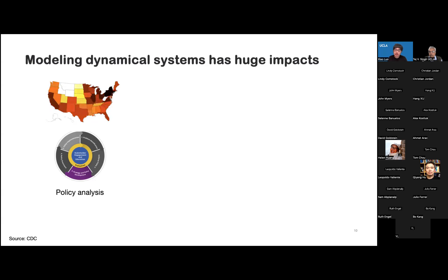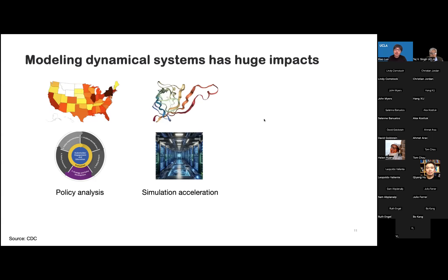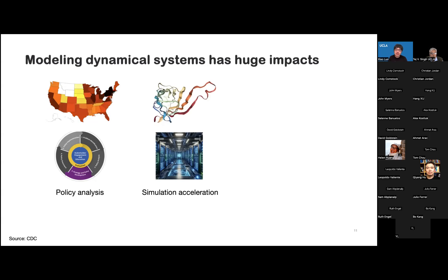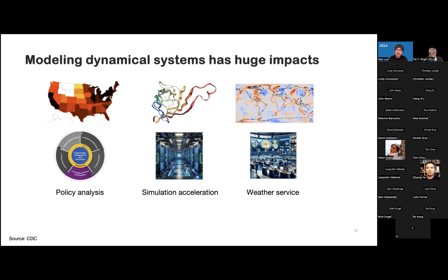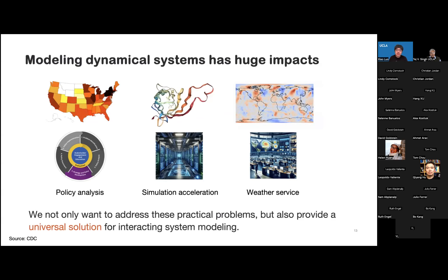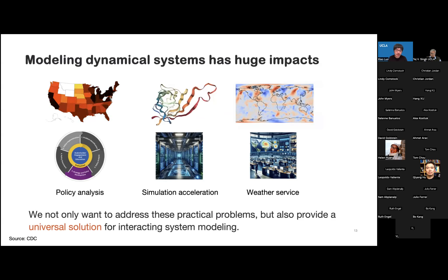If we can track the trend of disease transmission, we can help the government with policy analysis and decision-making. We know that molecular dynamical simulation costs a lot of computational resources, so if we can build data-driven methods for this, it can save a lot of computational costs. Lastly, if we can track the trend of climate change, it will prevent extreme weather and improve the quality of our life. So generally, we not only want to address these practical problems, we also want to provide a universal solution for interacting system modeling.